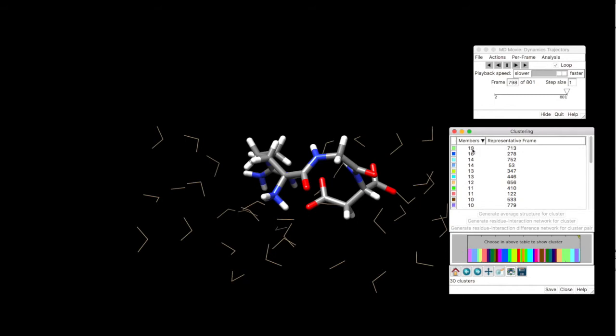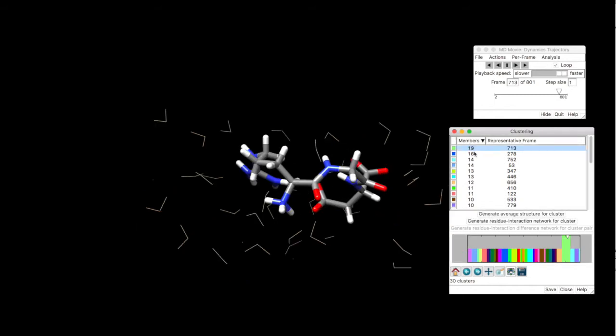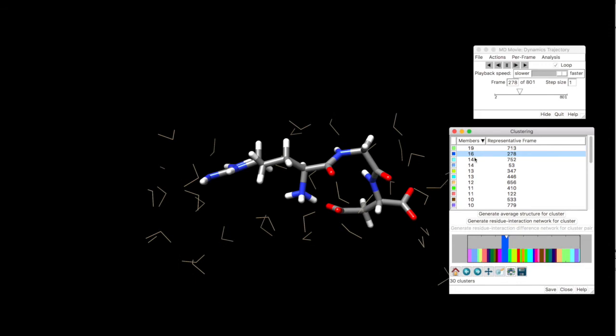So you can see here we have different clusters that are found based on the RMSD analysis. For example, you have 19 residues which are very similar. The representative frame is number 713. We have 16 members that are very similar. And we have representative frame like that.